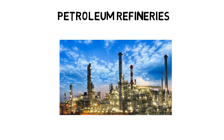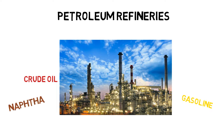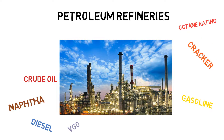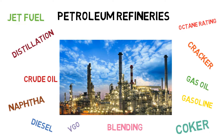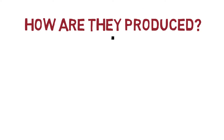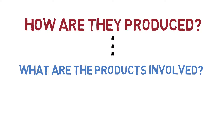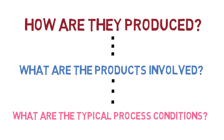I'm pretty sure you have heard about petroleum refineries and their products — gasoline, naphtha, crude oils, distillation, jet fuels, diesel, and so on. But how are they produced? What are the products involved in the petroleum refinery? And what are the typical conditions of the processes?